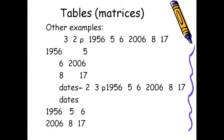Here's another example where we reshape the numbers 1956, 5, 6, 2006, 8, 17 in three rows and two columns. Further below, we reshape it again. This time we give it a name and we reshape it in the form of two rows and three columns.